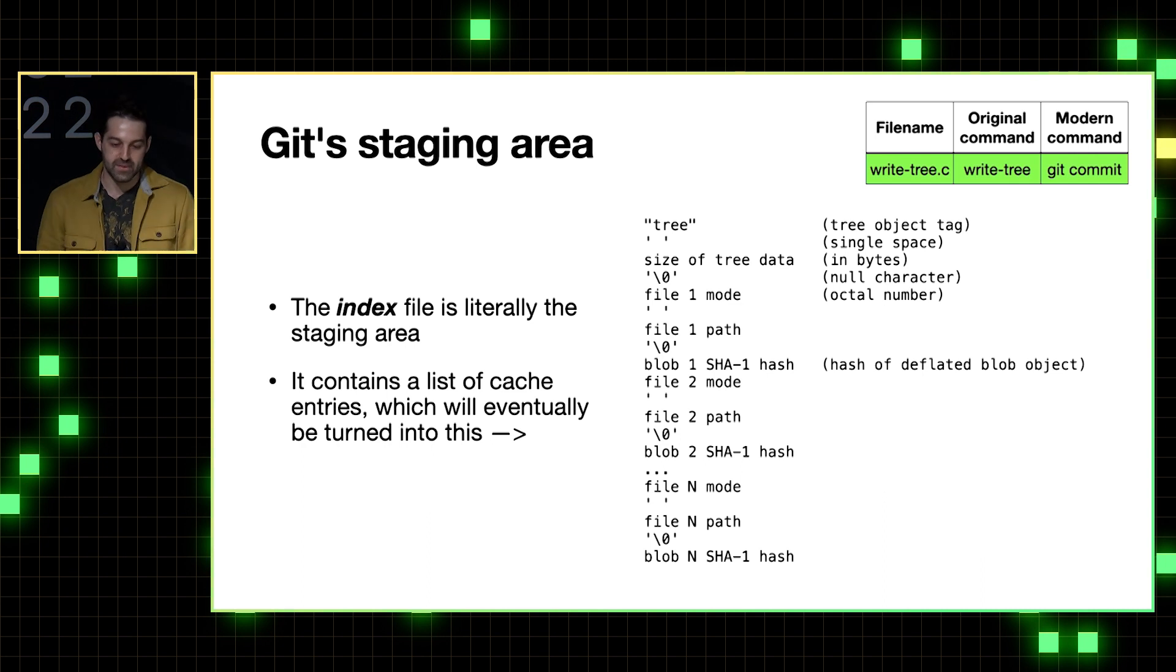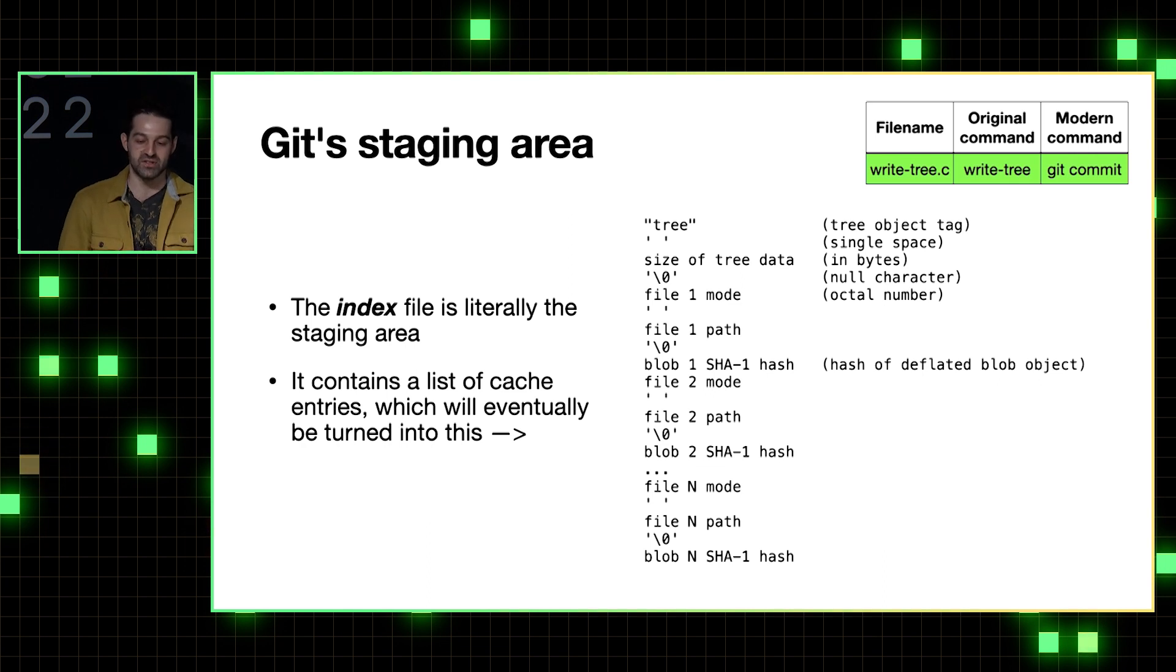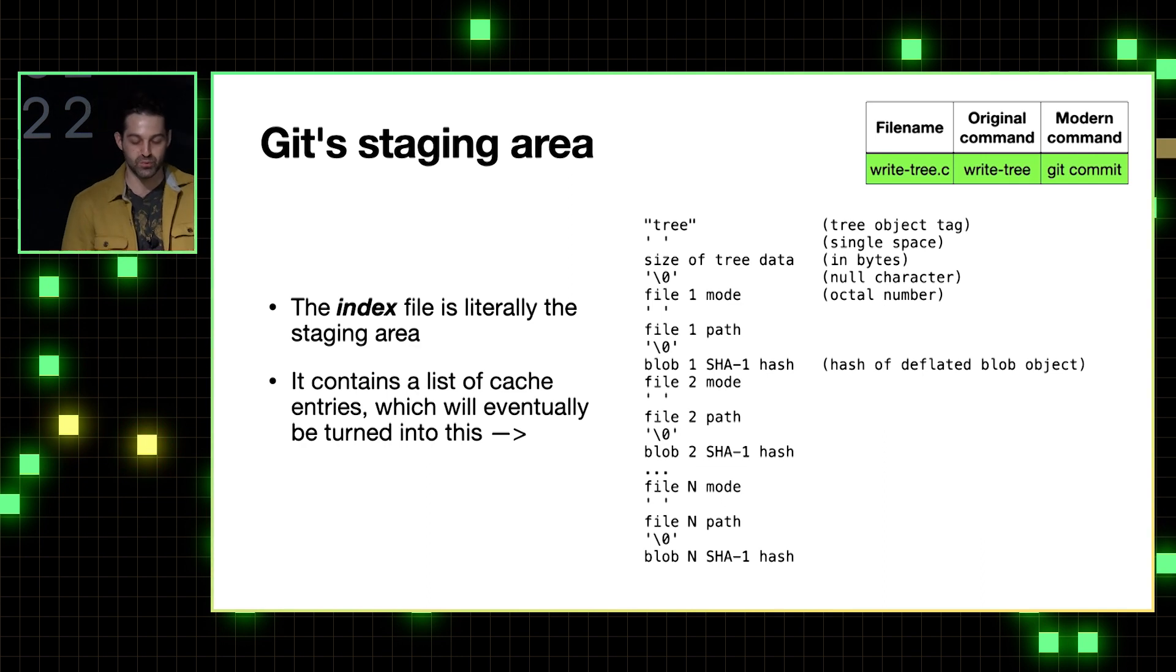which we tend to think of kind of conceptually as Git users. But in reality, that plain old file called index that I mentioned literally is the staging area. And it will be populated with a list of those cache entries we saw on the previous slide to eventually be turned into a proper tree format that you can see on the right here.